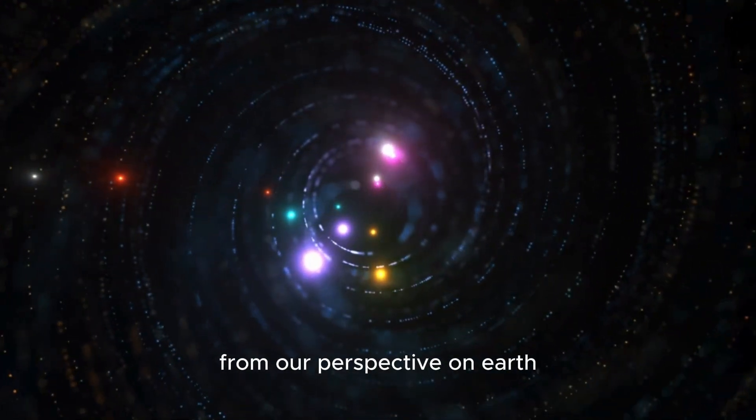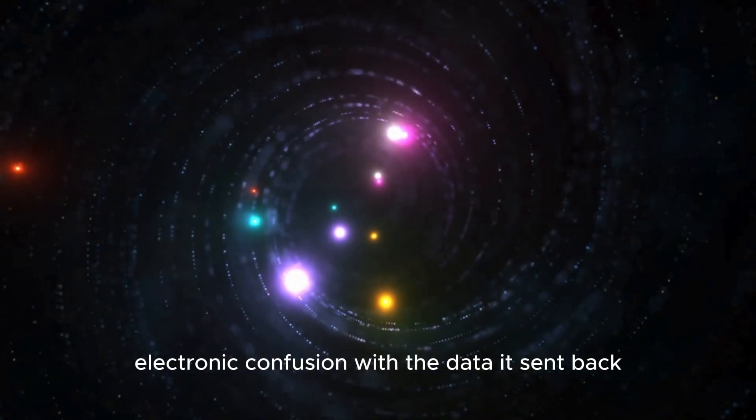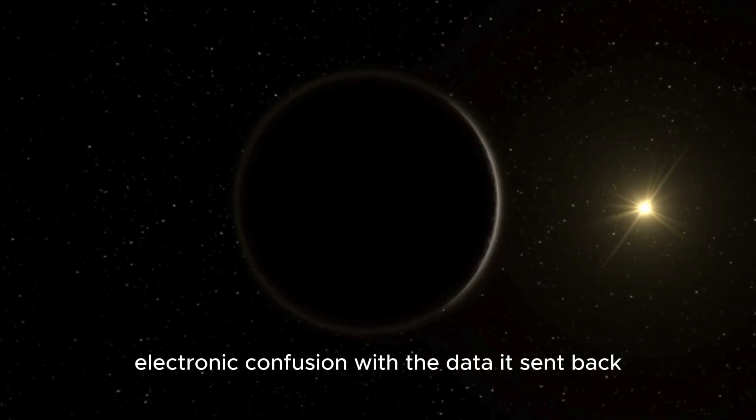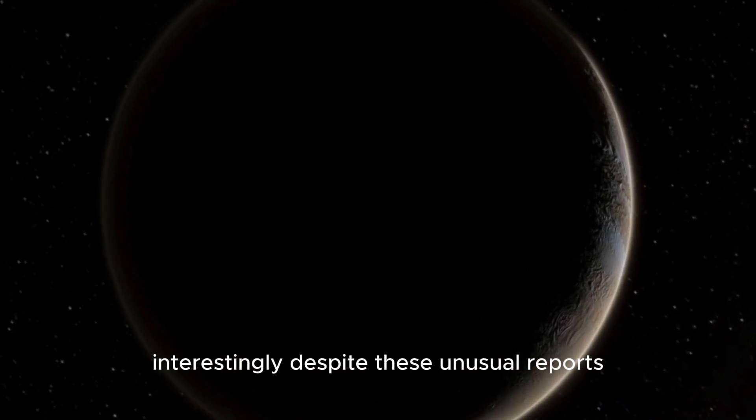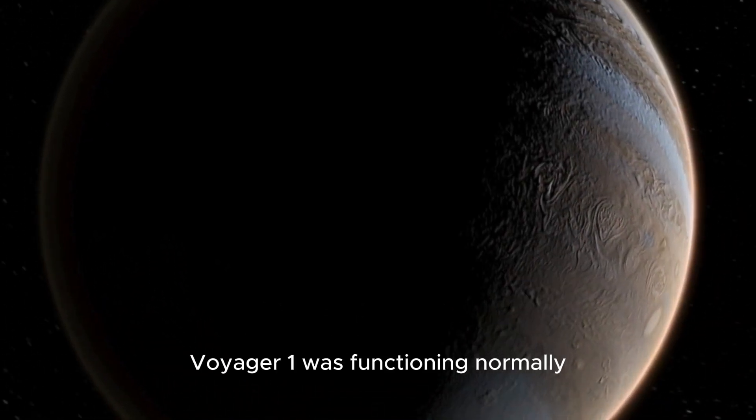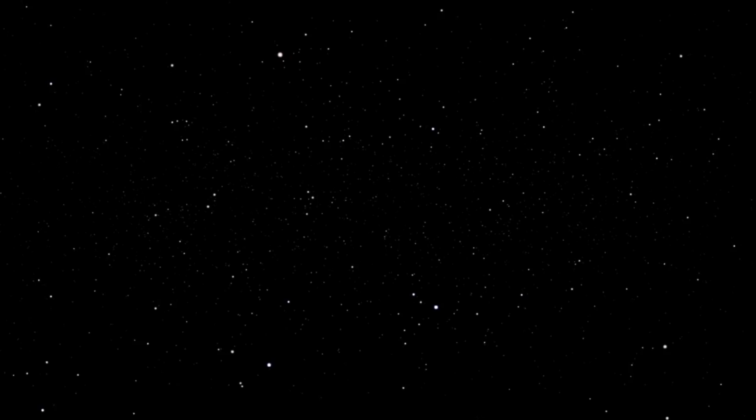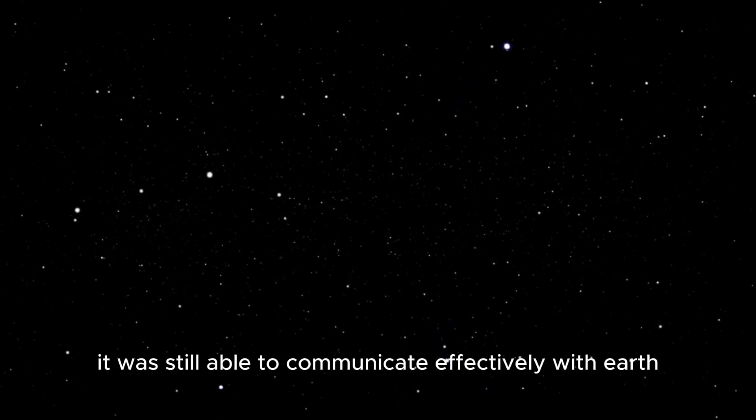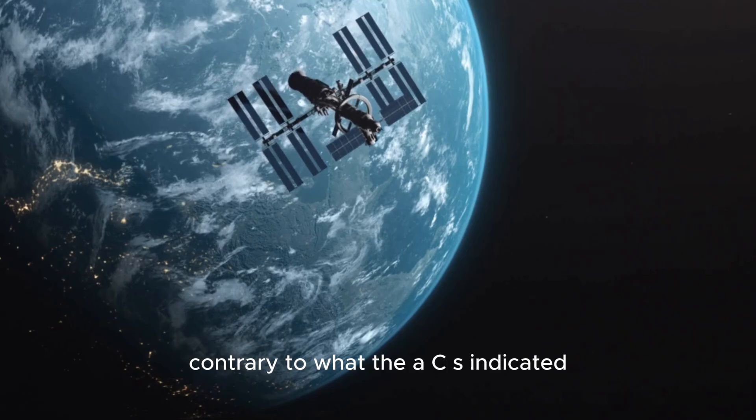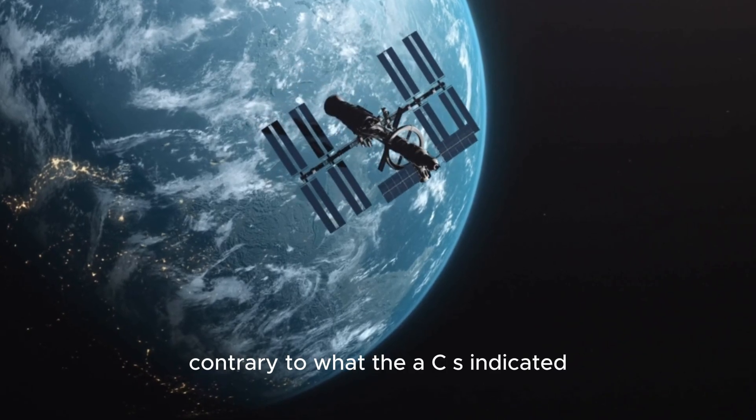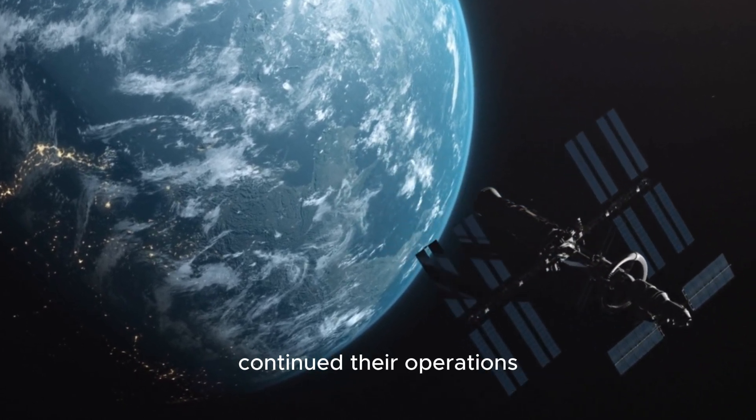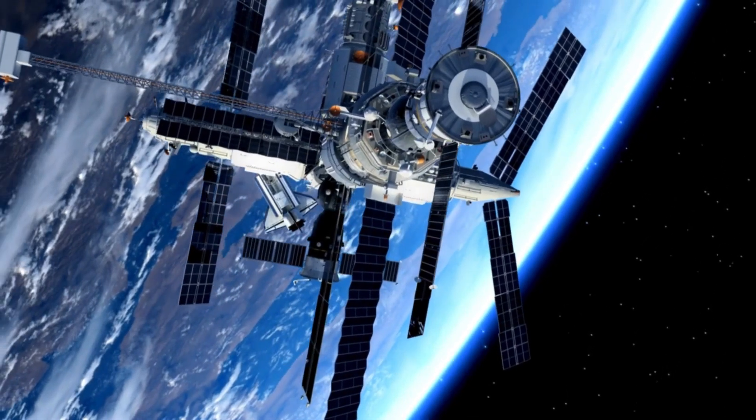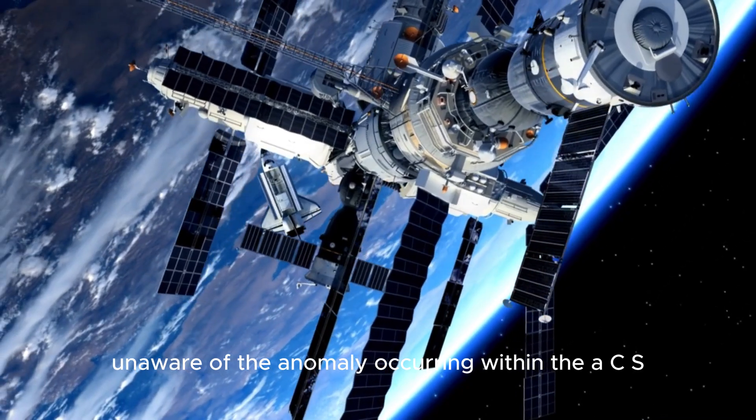From our perspective on Earth, it seemed that Voyager 1 was encountering electronic confusion, with the data it sent back appearing erratic or lacking coherence. Interestingly, despite these unusual reports, Voyager 1 was functioning normally. The radio signals remained strong and stable. It was still able to communicate effectively with Earth, contrary to what the ACS indicated, which only added to the intrigue. The scientific instruments on board continued their operations without any issues, unaware of the anomaly occurring within the ACS.